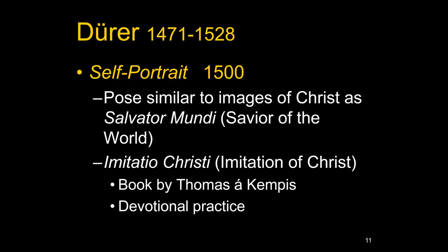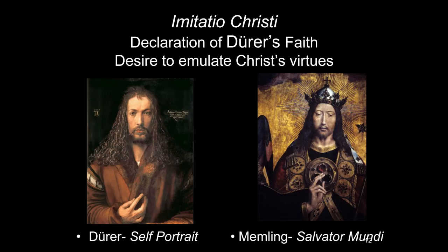People were told they should imitate Christ. Nobody can completely be Christ-like — we're not perfect, and Christ was believed to be both God and man. But when we see Dürer representing himself in a pose reminiscent of the Savior of the World, we can see that as a declaration of Dürer's faith — as though he's saying, I want to be like Christ, I want to emulate his virtues. There's another idea too: that Dürer is a creator, as God created the world — in a sense, painters recreate the imitation of the world.